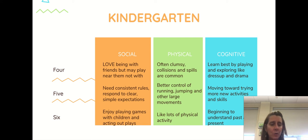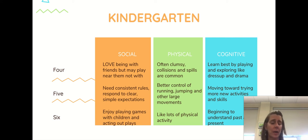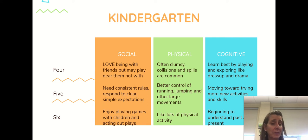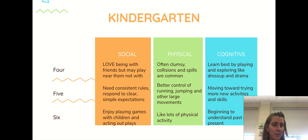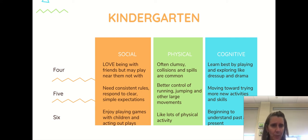It also gives you physical characteristics: at four, they're often clumsy — collisions and spills. As they get to five, they should have better control of running, jumping, and other large movements. And at six, they really like lots of physical activity. Cognitively, they learn best by playing at four. At five, they're moving toward trying more new activities and skills. And at six, they're beginning to understand the difference between past and present. Those are some examples of what you might find cognitively at kindergarten.